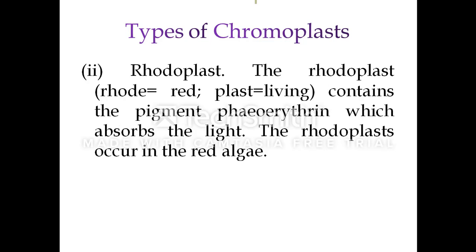Another type of chromoplast is rhodoplast — 'rhod' refers to red, 'plast' means living. Rhodoplast contains the pigment phycoerythrin, which absorbs light. Rhodoplasts occur in red algae.